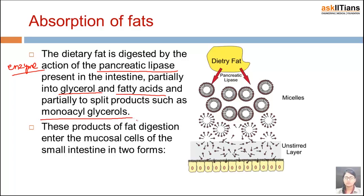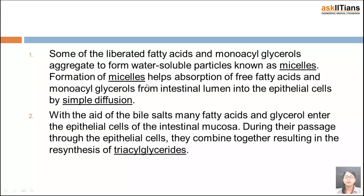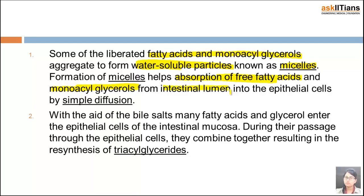Sometimes monoacyl glycerols are also produced. These products of fat digestion enter the mucosal cells of the small intestine in two forms. The first is a micelle — an aggregate of fatty acids and monoacyl glycerols that are water-soluble particles. Micelle formation helps in the absorption of free fatty acids and monoacyl glycerols from the intestinal lumen into the epithelial cells by simple diffusion.